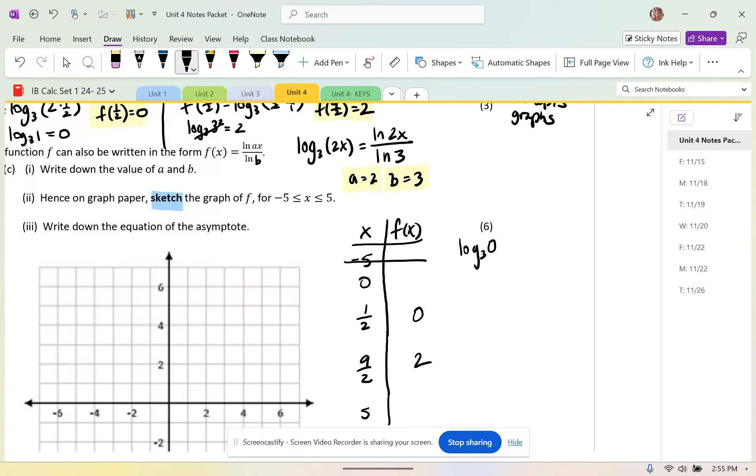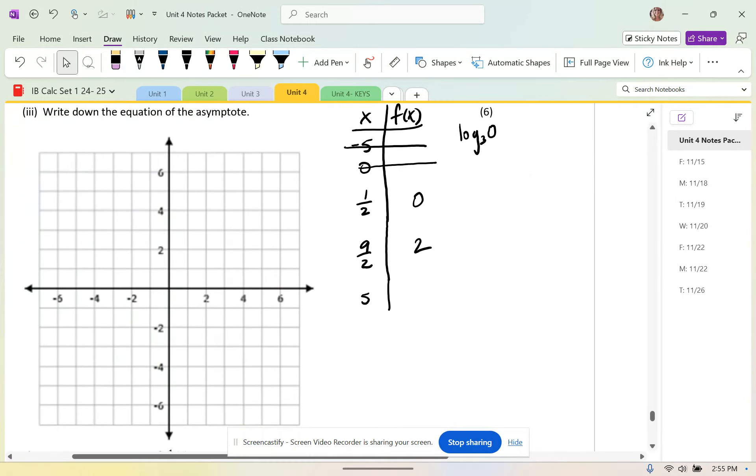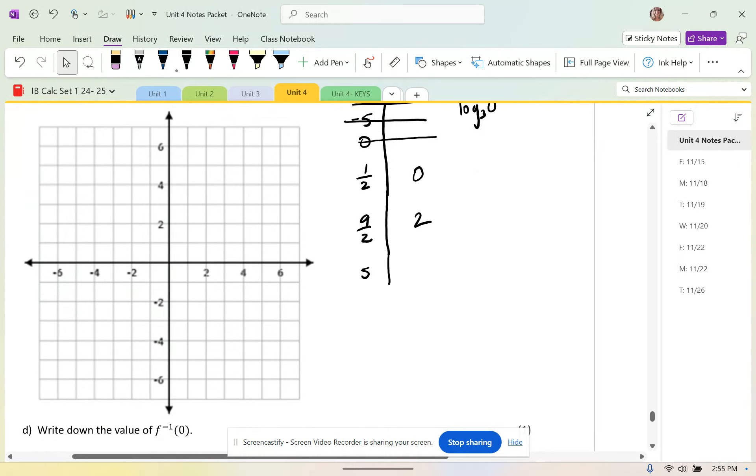Log base 3 of 0. Wait, he's also undefined there. So it looks like we're going to have a vertical asymptote all the way up until 1 half 0, which is where we cross the x-axis. And then let's see what it looks like past that. 9 over 2 is the same thing as 4.5. So that's going to look like it's right in between here. And that is 2.